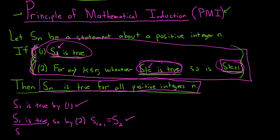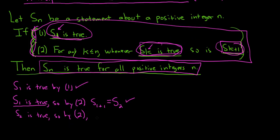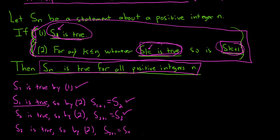Using the same argument, we can say: now we know S2 is true. So by condition 2, S sub 2 plus 1 — which equals S sub 3 — is true. And we do it again: now we know S3 is true, so by condition 2, S sub 3 plus 1 — which equals S sub 4 — is true, and so on.